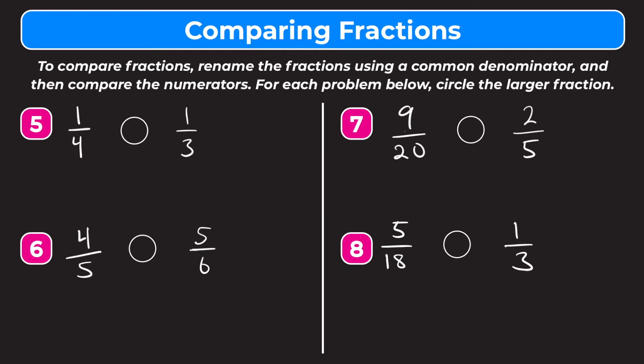So let's try a couple more problems. If you're feeling confident, you can pause the video here and follow along. For number five, we have one-fourth and one-third. They don't share a common denominator, so we're going to rename these using a common denominator and then compare the numerators. The common denominator for one-fourth and one-third is going to be twelve. For one-fourth, we multiply the numerator and denominator by three, giving us three-twelfths. For one-third, we multiply by four, giving us four-twelfths. Four-twelfths is obviously bigger, which means one-third is bigger than one-fourth. So we write our symbol and circle one-third.